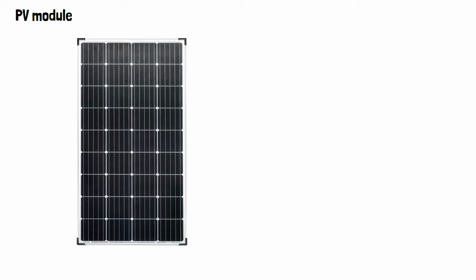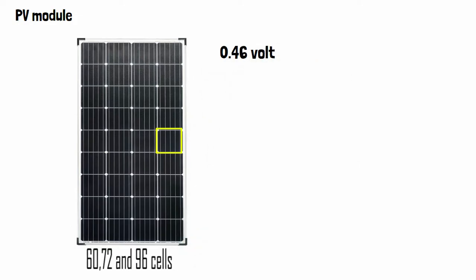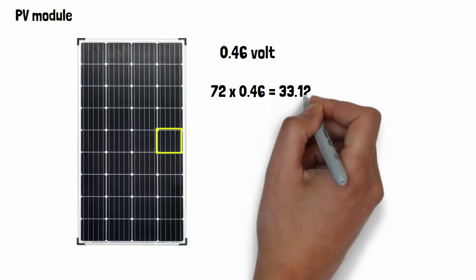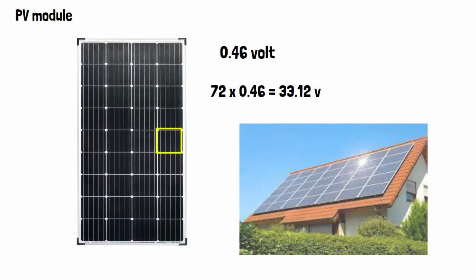Each cell can produce about 0.46 volt of electricity. Mostly it can be found in arrangement of 60, 72 and 96 cells. A solar panel comprising 72 cells generates 33.12 volt per hour but it also depends on the sun hour.